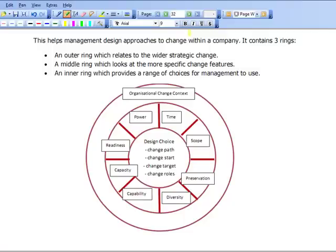The Change Kaleidoscope, as the notes say, helps management design approaches to change within a company. It contains three rings. First of all, an outer ring. The outer ring relates to the wider strategic choices. In other words, we're looking at the organizational change context. In what context is change happening?